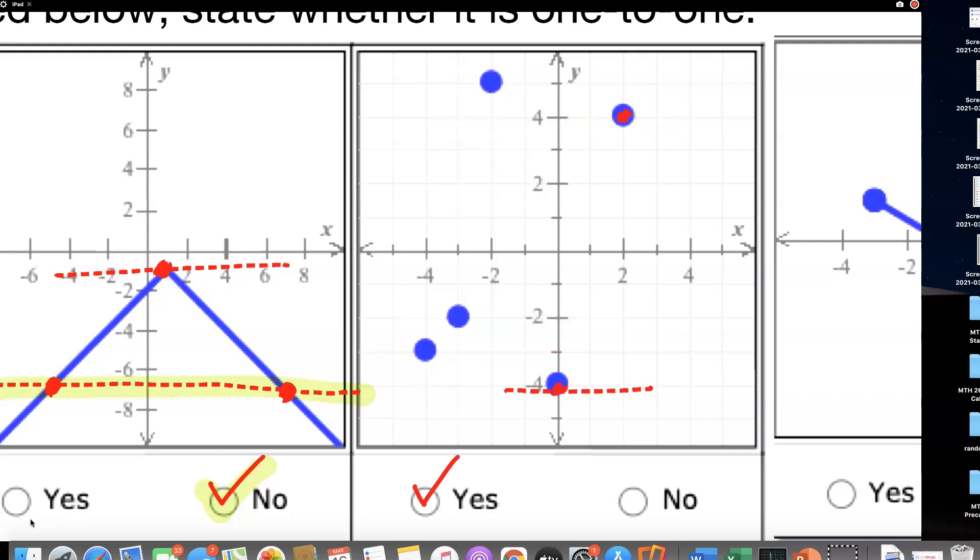But guys, look. What if I, let me erase these horizontal lines. What if I have another point, like, right here? What if I have another point right there? If I have a point right there, then a horizontal line will have two points. If that's the case, it's not going to be a 1 to 1 function. But none of the points, I had 1, 2, 3, 4, 5 points here. And none of those five points were on the same horizontal line as the other. So this is a 1 to 1 function.